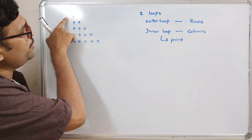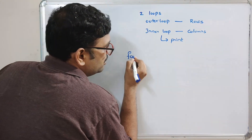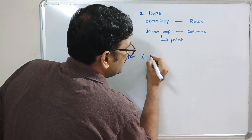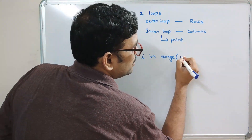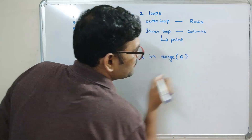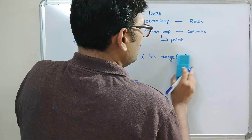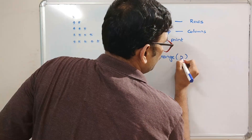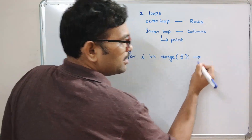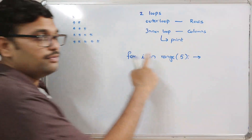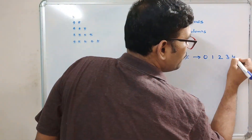First we write the outer loop. How many lines are there? Five lines — we need to print five lines. In Python: `for i in range(5)`. This means the values of i will be 0, 1, 2, 3, and 4 — a total of five rows.